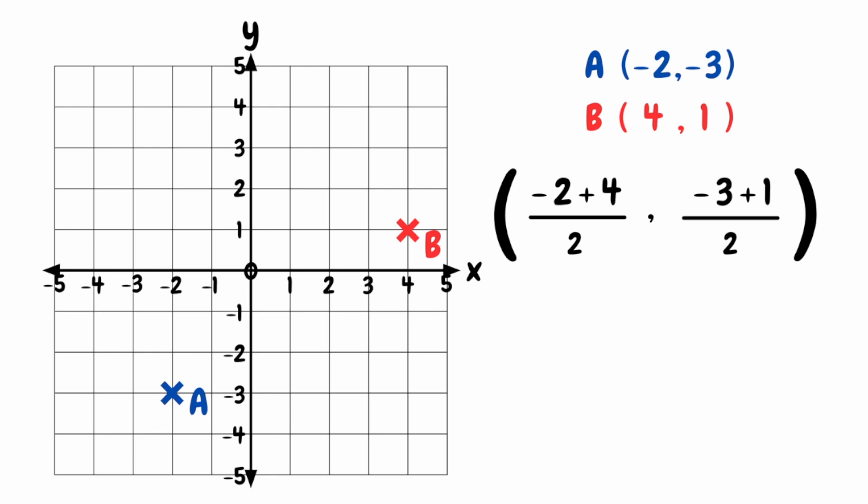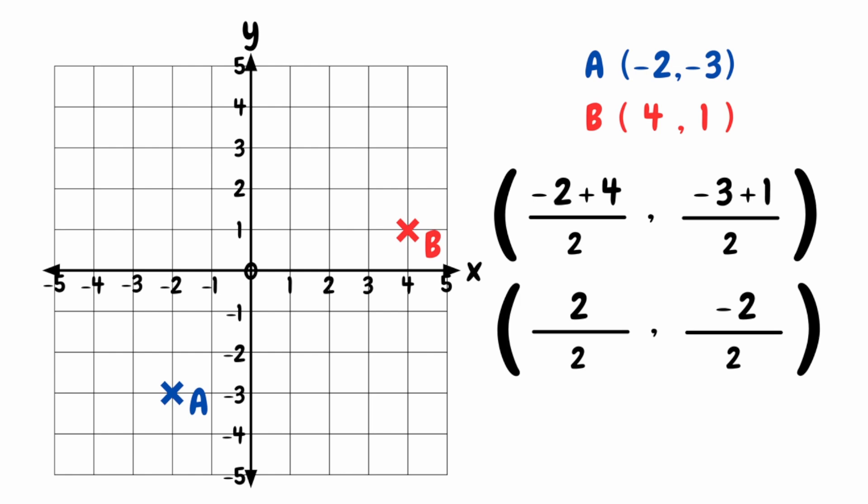Starting with the x-coordinate of the midpoint, looking at the numerator, we've got negative 2 add 4, which would simply be 2. So now we've got 2 over 2. And then for our y-coordinate of our midpoint, looking at that numerator, we've got negative 3 plus 1, which gives us negative 2. So we've now got negative 2 over 2. For our final step, we simplify further. For our x-coordinate we've got 2 divided by 2, which is 1. And for our y-coordinate, we've got negative 2 divided by 2, which is negative 1.